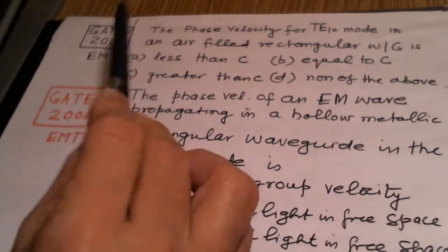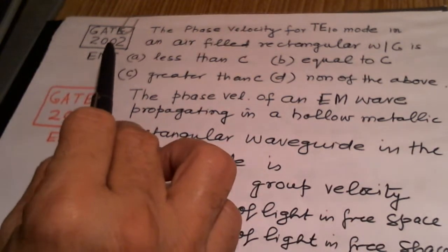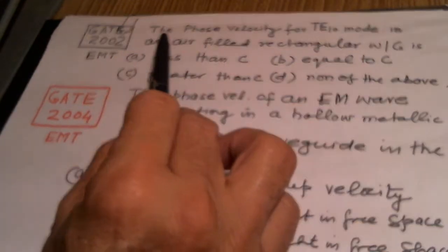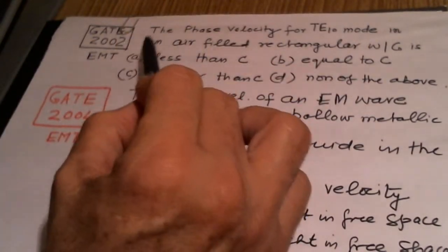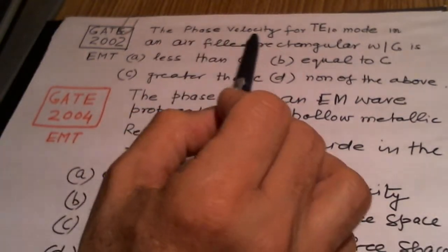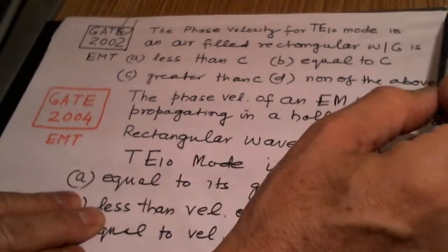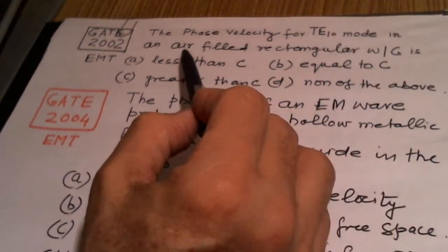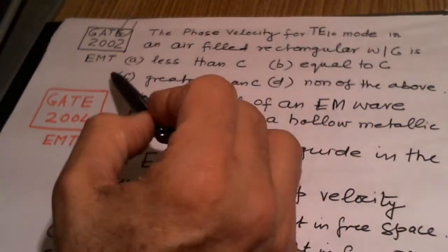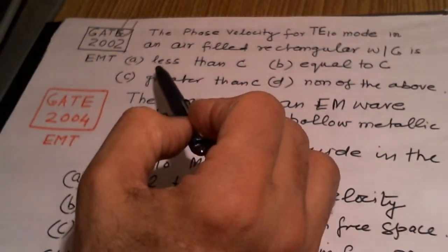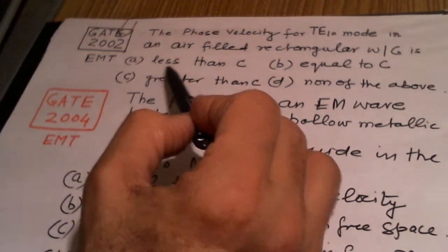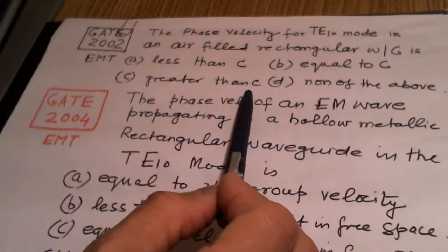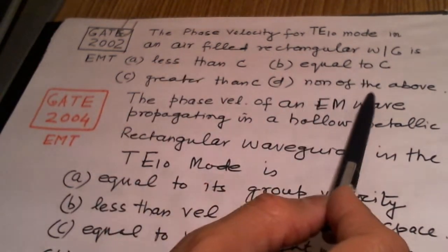These problems are indicated here. And towards the end, I will give a common solution to all these problems. The first problem is on GATE 2002, and this problem is stated as the phase velocity for TE10 mode in an air-filled rectangular waveguide. There are four options: Option A is less than C, equal to C, greater than C, and the last option is none of the above.